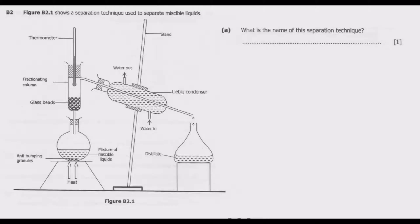Question A, what is the name of the separation technique? So if you look carefully at this one, you notice that basically this is fractional distillation. So fractional distillation is basically the method used to separate a mixture of miscible liquids.